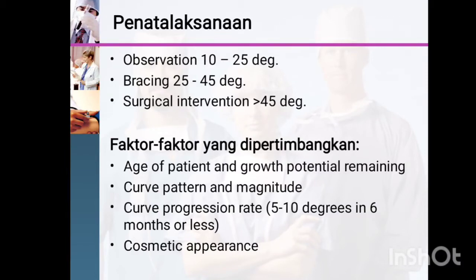Treatment of scoliosis depends on the degree of severity. Doctors usually only observe the curve if it is between 10 to 25 degrees. Bracing is used for curves of 25 to 45 degrees, and surgical intervention is indicated when the curve is more than 45 degrees.